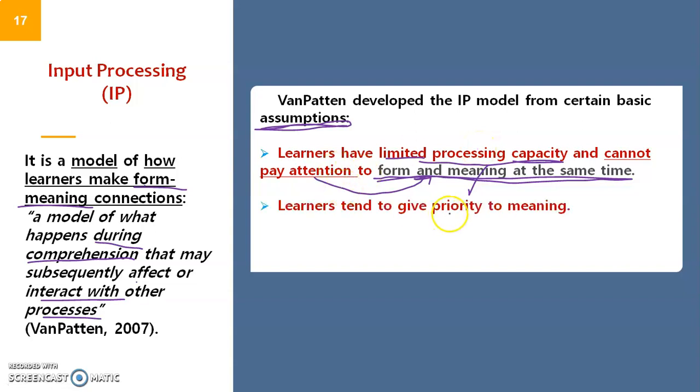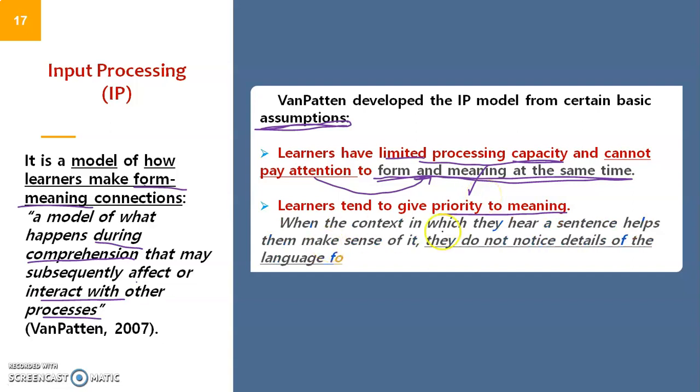Learners tend to give priority to meaning. Yes, we want to understand - this is the basic aim of language and of input. We don't focus on form unless we decide to pay attention, and it does not happen automatically. When the context helps them make sense of a sentence, they do not notice details related to language form - grammatical rules. This explains why learners in an emerging context for 17-20 years still do errors in language forms and structures, because they haven't been paying attention to form during the process of acquiring the language.